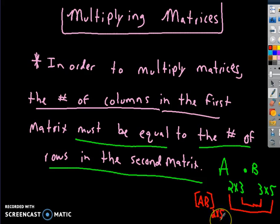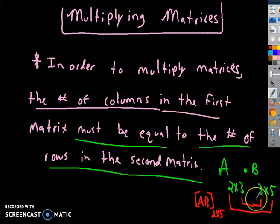After you multiply them, you get a new matrix with new dimensions. What must be true is that the middle numbers have to equal each other. If they don't equal each other, then it's impossible to multiply them — the multiplication is undefined.